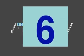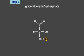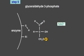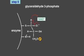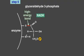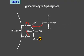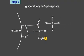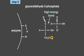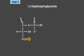In step six, the enzyme glyceraldehyde-3-phosphate dehydrogenase uses NAD to oxidize glyceraldehyde-3-phosphate. The resulting molecule is connected to the enzyme by a high-energy thioester bond. A molecule of inorganic phosphate displaces the high-energy thioester bond, forming a high-energy acyl-anhydride bond. The resulting molecule is 1,3-bisphosphoglycerate.